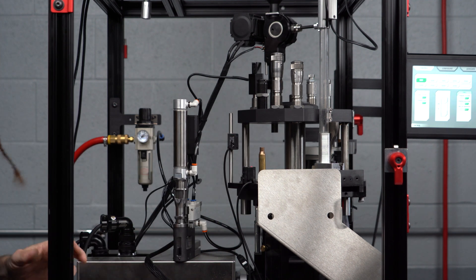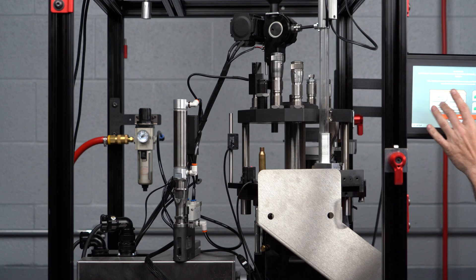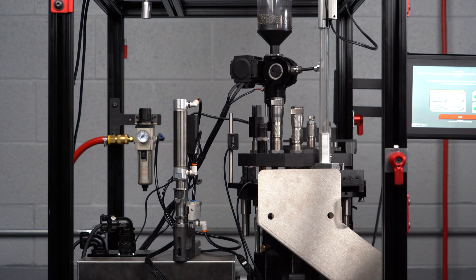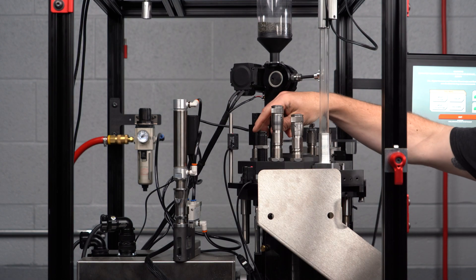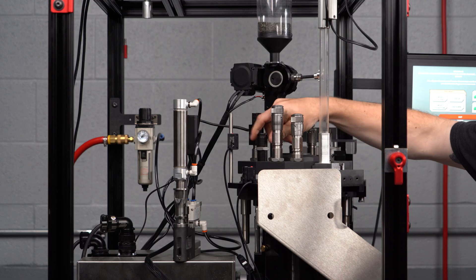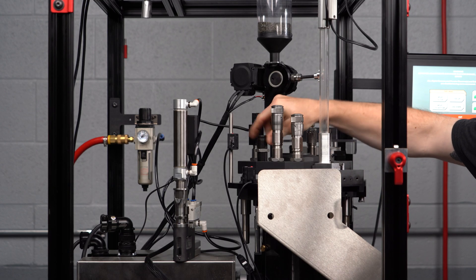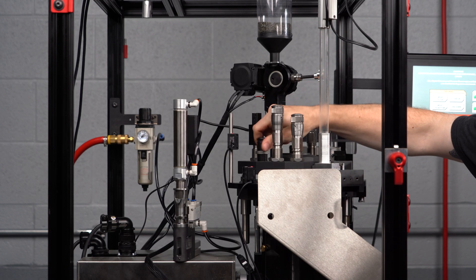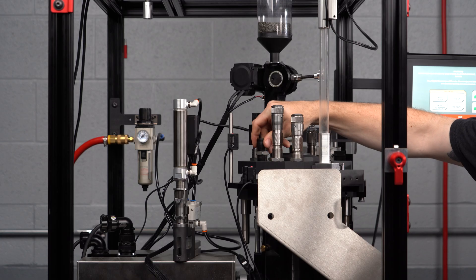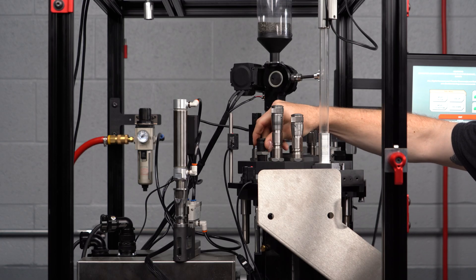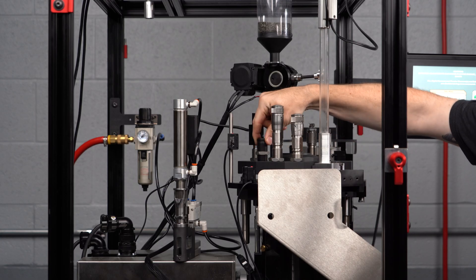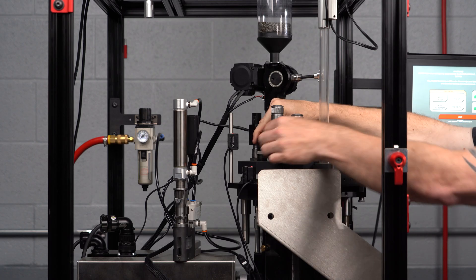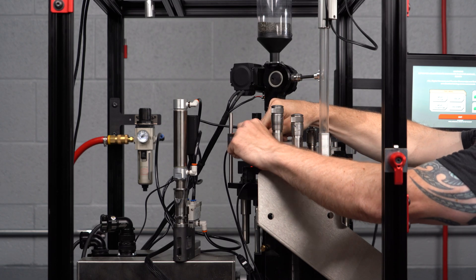We can now thread this die down until we meet resistance and back it off one half of a turn. I feel the die engage in the case, backed off roughly a half turn and secure the die lock nut.